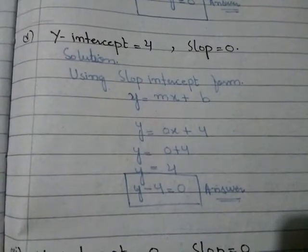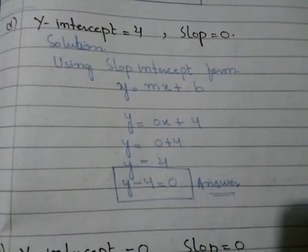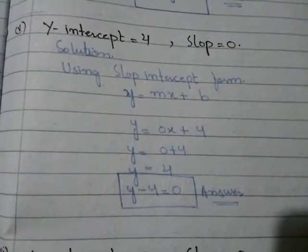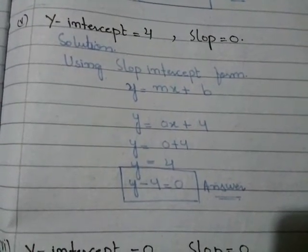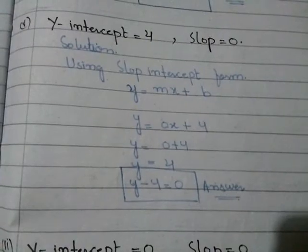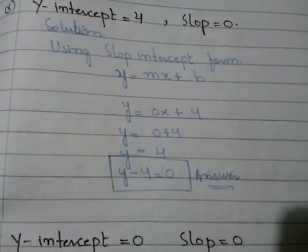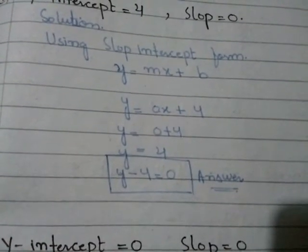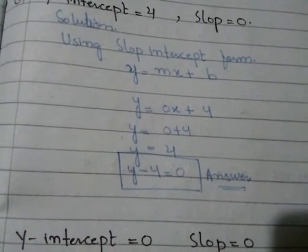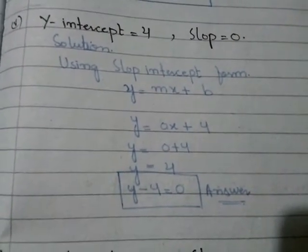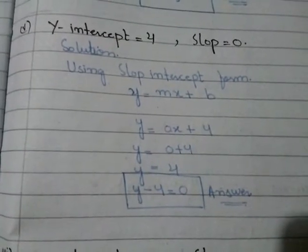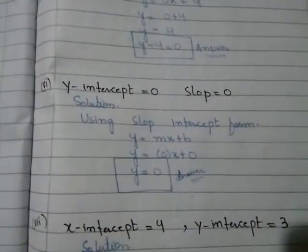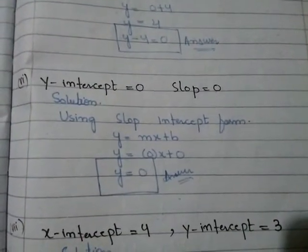Question number 5: y-intercept is equal to 4 and slope is equal to 0. Solution: using slope-intercept form, y = Mx + B. y = 0x + 4 = 0 + 4. y = 4. Rearranging: y − 4 = 0. This is our required equation.